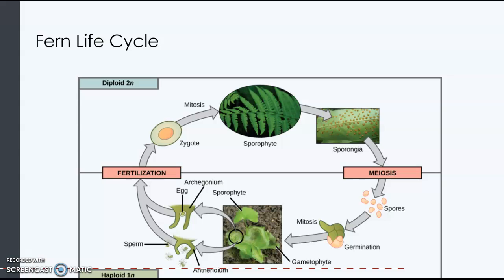The fern is going to have a gametophyte, which is like a heart-shaped leaf that lies flat on the floor of the forest. Within that heart-shaped leaf, there's going to be an archegonium, which will contain the egg, and an antheridium, which will contain the sperm. The male and female gametophytes are on the same structure — they're all found on the same gametophyte, so they're not separate like they were with the mosses.